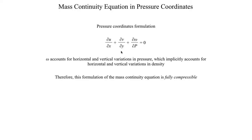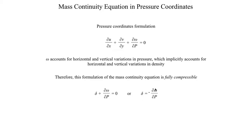If we rewrite the equation in terms of kinematic quantities: du/dx + dv/dy is the horizontal divergence, delta. So we can write: delta + dω/dp = 0, or equivalently, delta = −dω/dp.